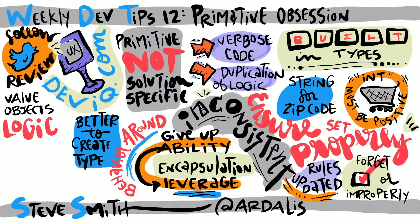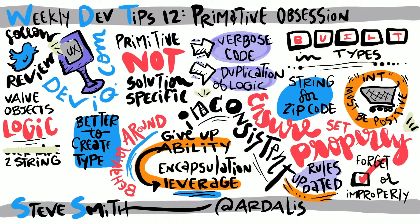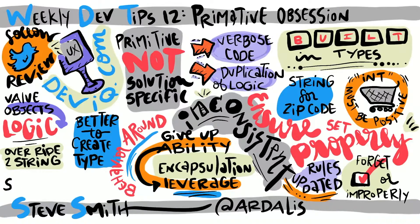You can make working with your new type about as easy as working with the primitive it's replacing by making sure you override its toString method. You can also handle comparisons and equality and configure implicit and explicit casting operators. Jimmy Bogart wrote a great article about 10 years ago that describes how to do exactly this for a simple zip code type in C#. You'll find a link to it in the show notes. Yes, you'll end up with a dozen or so lines of code in your zip code class instead of just using a string, but any logic that relates to zip codes will also live in this class rather than being scattered throughout your application.